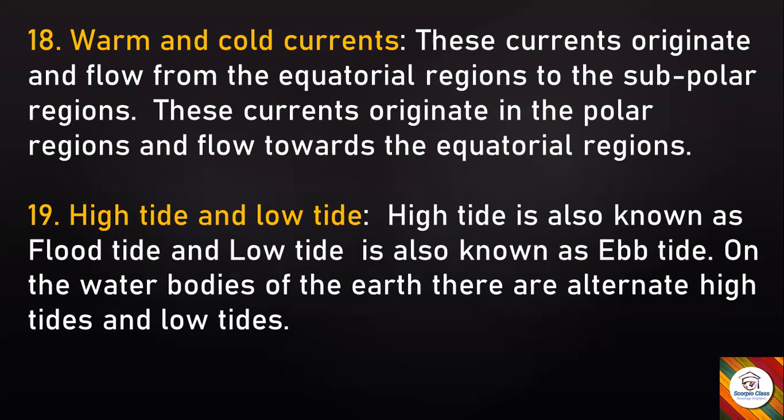High tide and low tide: High tide is also known as flood tide, and low tide is also known as ebb tide. On the water bodies of the earth, there are alternate high tides and low tides.